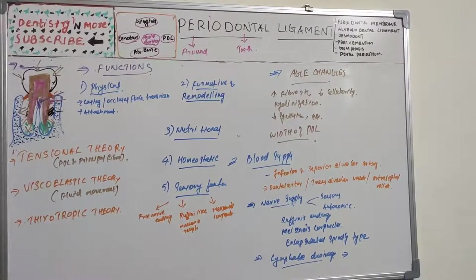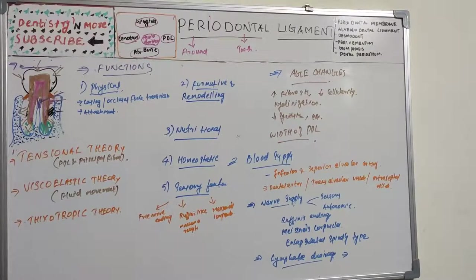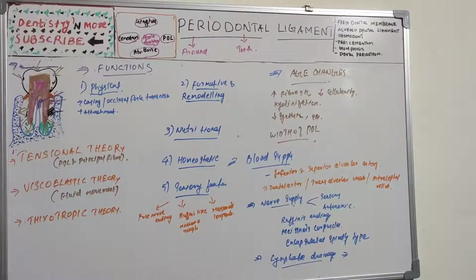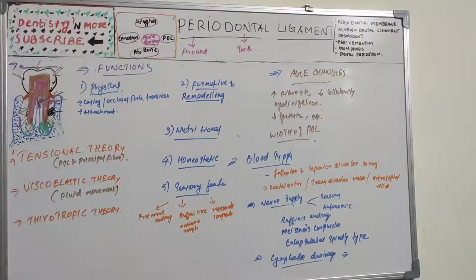The thixotropic theory states that the PDL has the rheologic behavior of a thixotropic gel — similar to fluoride gel, which becomes liquid under pressure and semi-solid again when pressure is removed. However, the presence of organized collagen fibers makes this theory unacceptable, and viscoelastic theory remains the most accepted.